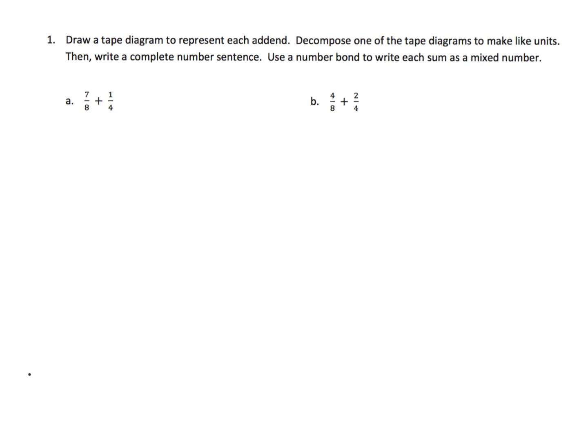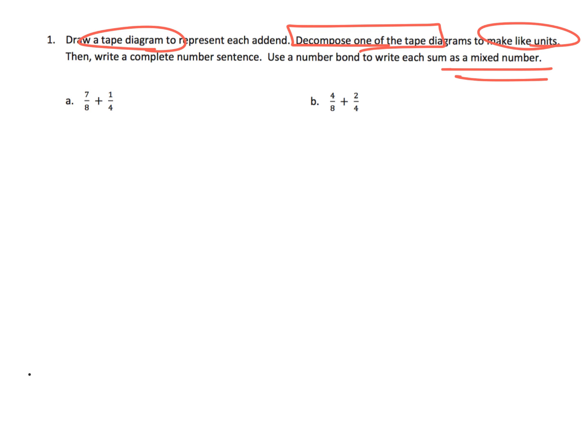We're going to use a tape diagram to represent our fractions. We're going to have to decompose one of the tape diagrams to get common denominators. They're telling us that we're going to have to use number bonds to write each sum as a mixed number, so basically they're telling us our answer is going to be larger than one.